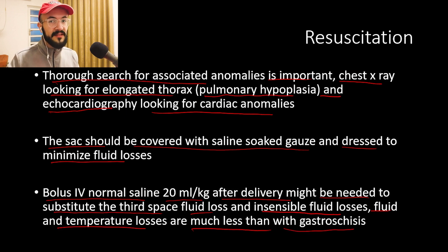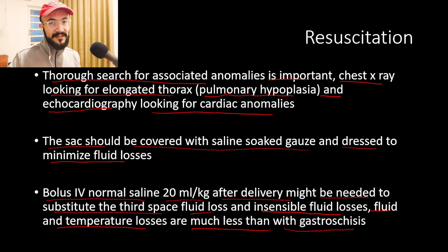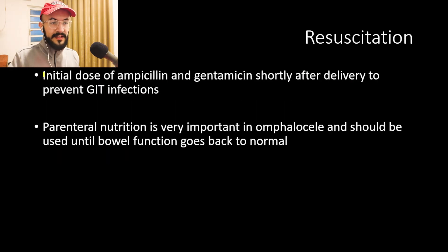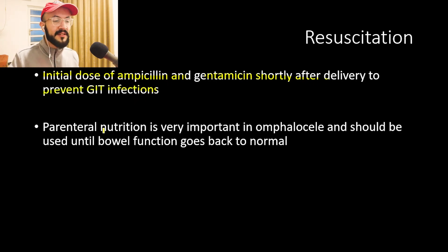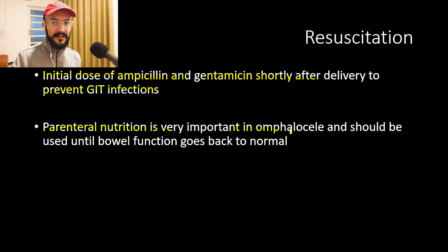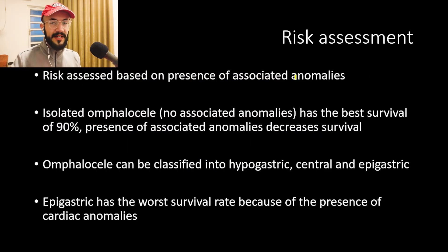Fluid and temperature losses in omphalocele are much less than with gastroschisis because in omphalocele there is a covering over the organs, so there is less fluid and temperature loss. An initial dose of ampicillin and gentamicin shortly after delivery is administered to prevent GI infections. Parenteral nutrition is very important and should be used until bowel function returns to normal.